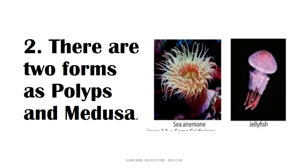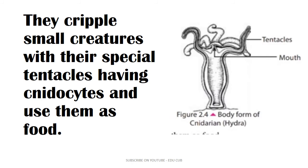There are two body forms in Cnidaria: polyps and medusa. Polyps are fixed to the substrate and lead a sedentary life, while medusa are free-floating organisms. Cnidaria capture small creatures using their special tentacles with nematocysts and use them as food.